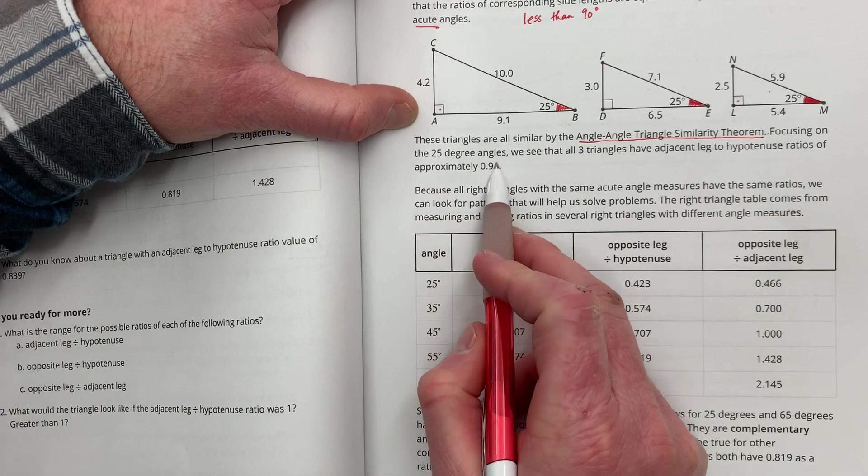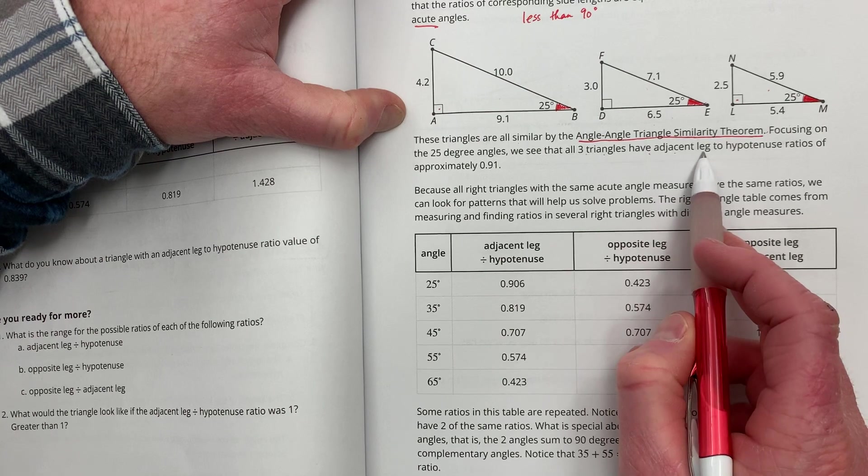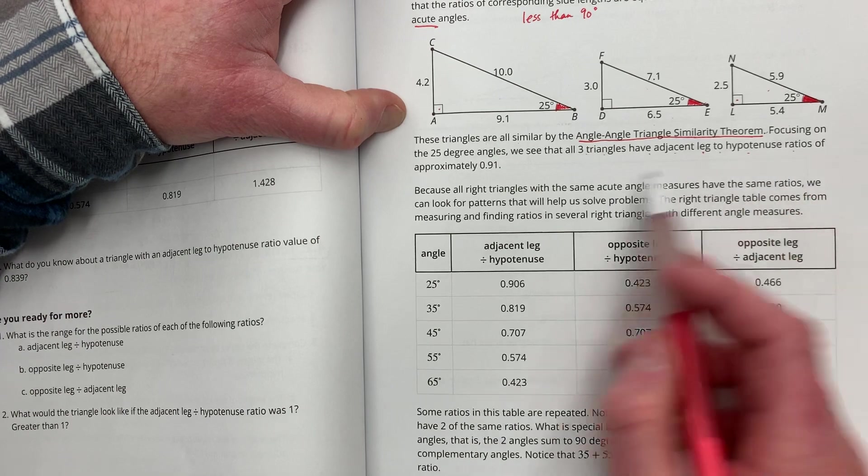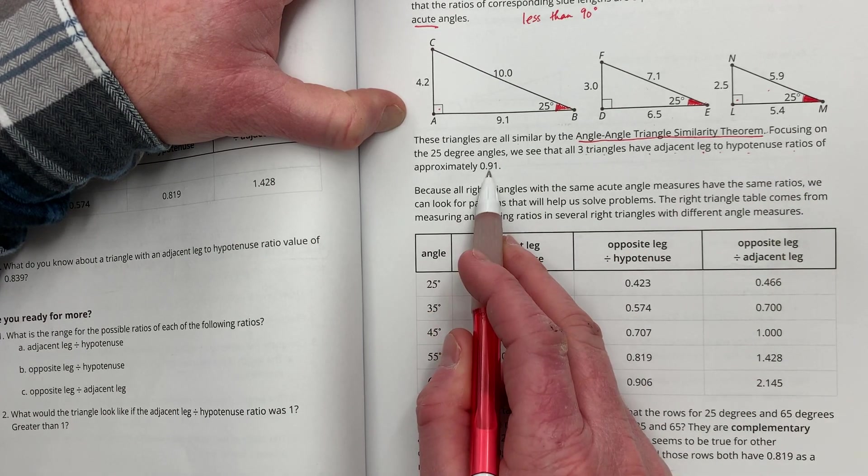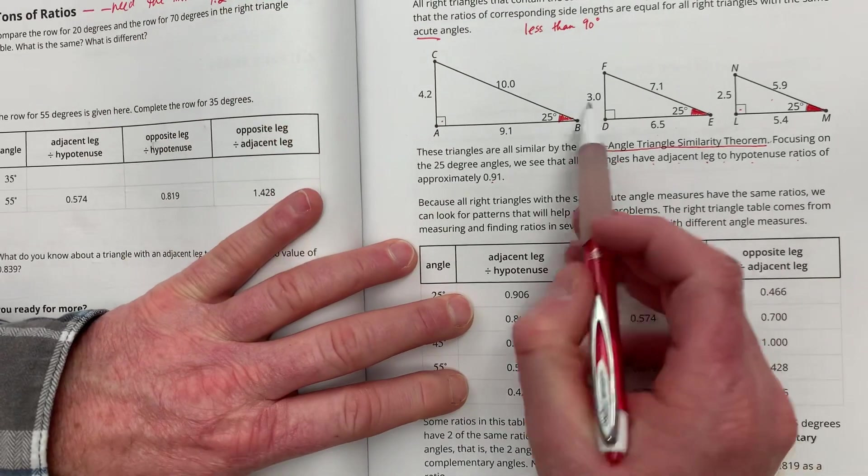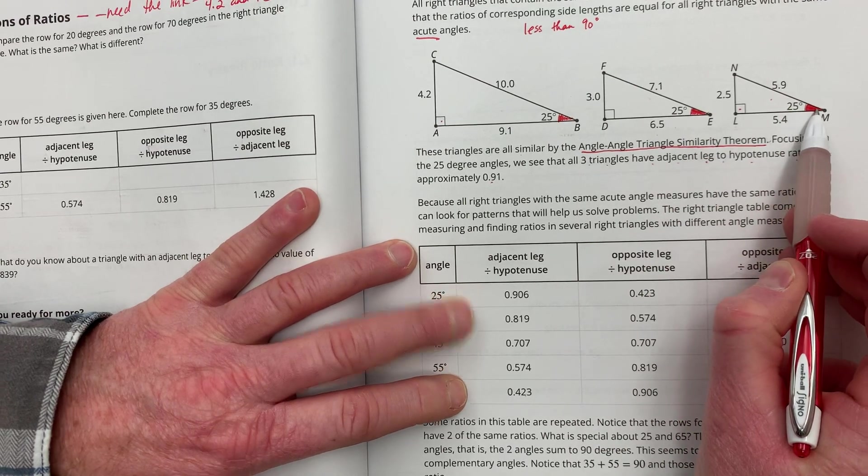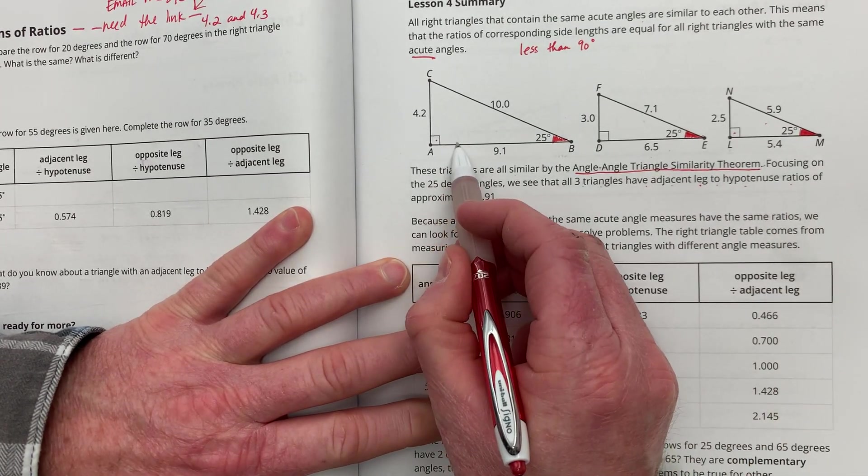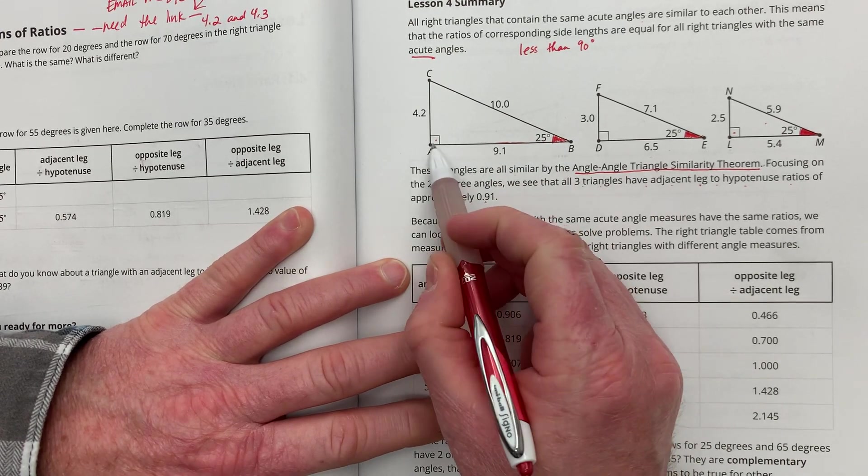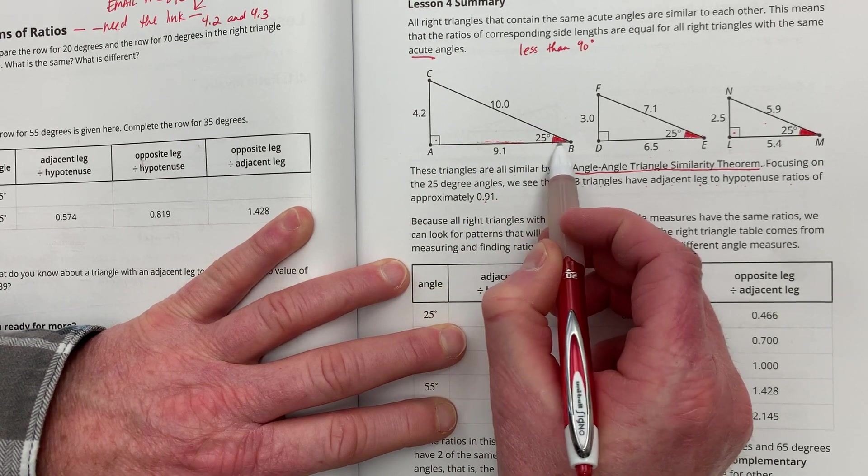Focusing on the 25 degree angles, we see that all three triangles have adjacent leg-to-hypotenuse ratios of approximately 0.91. What the heck does that mean, right? All right, well, from the perspective of the 25 degree angle, this one is adjacent to the 25 degree angle. In other words, it's right next to it. In fact, it actually helps create the angle.